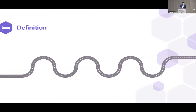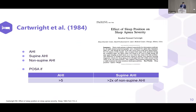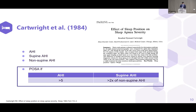This is the roadmap showing the history of development for the definition of positional OSA. Back in 1984, Cartwright classified positional apnea syndrome based on three parameters, and classified the patient as having OSA when the supine AHI is more than two times the non-supine AHI.